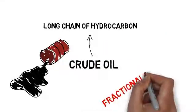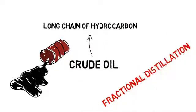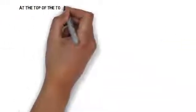In this process, there is a huge tower with different heating points in it. As you pour in the crude oil, it heats up at certain points of the tower at different temperatures. Parts start to break off to form different products.